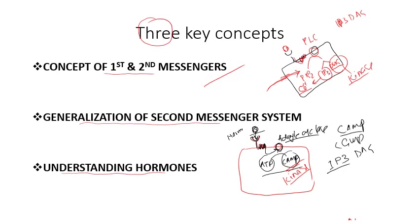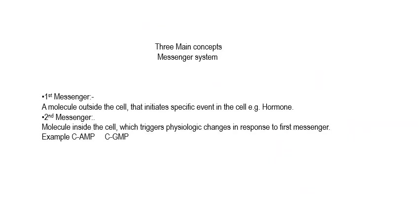So far we have three important messenger systems: cyclic AMP, cyclic GMP, and IP3/DAG. The concept of first and second messenger is now clear. The first messenger is any ligand that attaches to the extracellular receptor, and the second messenger is either cyclic AMP, cyclic GMP, or IP3/DAG. By generalization, we mean studying the general messenger system that fits a lot more hormones, making things easier instead of memorizing individual hormones.